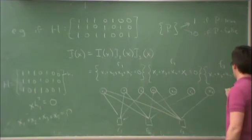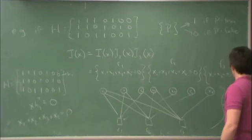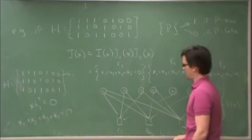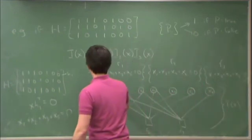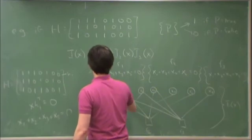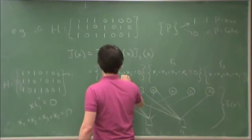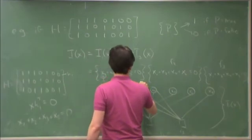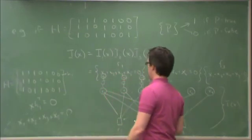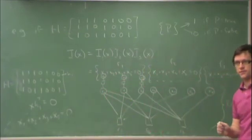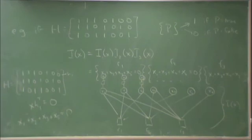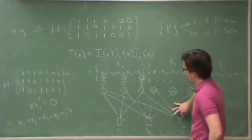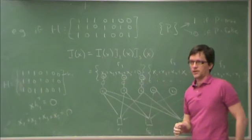So this is the factor graph for i of x. And we add that to the observation factors, like so. Form the complete factor graph of the code and the corresponding observations.